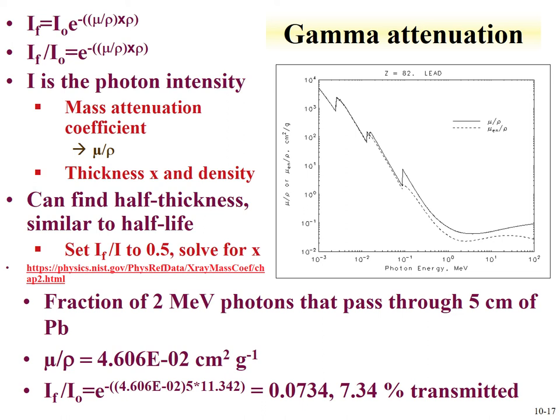Gamma attenuation can be modeled like Beer's Law: the final photon intensity equals the initial intensity times e^(−μ_m × x × ρ), where μ_m is the mass attenuation coefficient, x is the material thickness, and ρ is the density. Given the mass attenuation coefficient, material thickness, and density, one can calculate the attenuation of photons through that material.